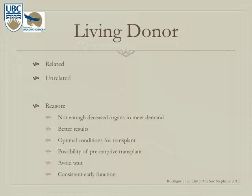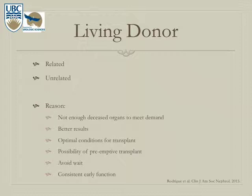Living donors are classified as related — meaning a blood relationship — or unrelated, which includes spouses, friends, or anonymous donors. Living donors are needed because there are not enough deceased donors to meet demand, and living donation produces better results through controlled conditions, appropriate HLA matching, timely organ transfer, and the possibility of preemptive transplant, which improves graft survival and recipient quality of life.